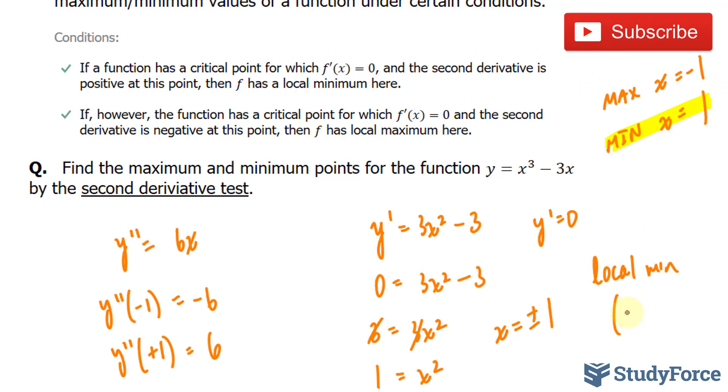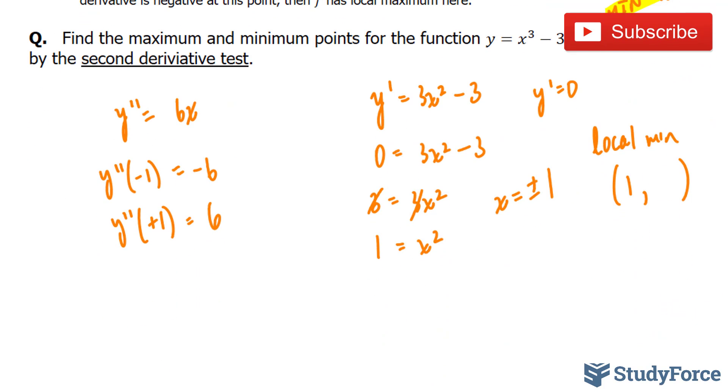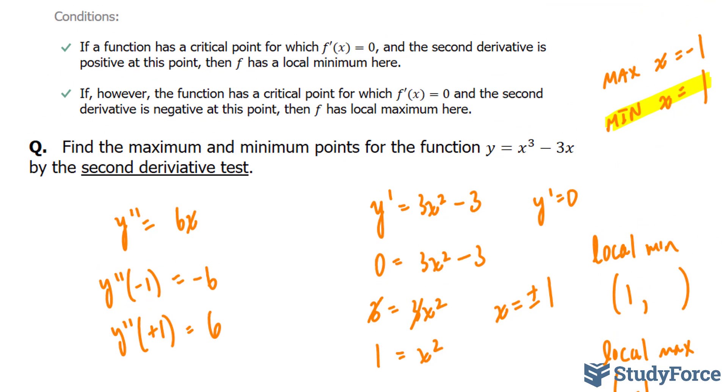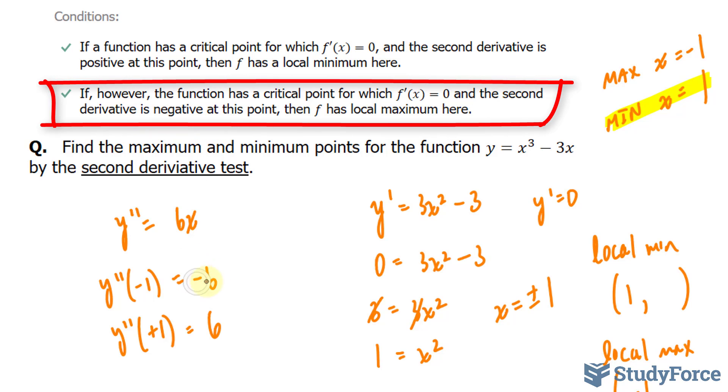And similarly, there's a local maximum at negative 1, because the second derivative is negative at this point, then there is a maximum.